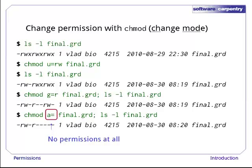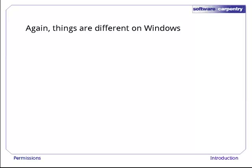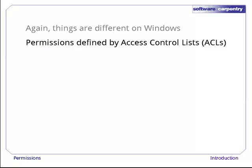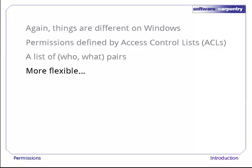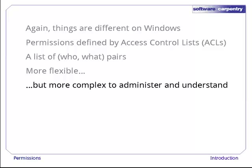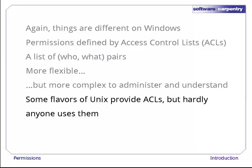Those are the basics of permissions on Unix. As we said at the outset, things work differently on Windows. There, permissions are defined by access control lists, or ACLs. An ACL is a list of pairs, each of which combines a who with a what. For example, you could give the mummy permission to append data to a file without giving him permission to read or delete it, and give Frankenstein permission to delete a file without being able to see what it contains. This is more flexible than the Unix model, but also more complex to administer and understand, at least on small systems. Some modern variants of Unix actually support ACLs as well as the older read-write-execute permissions, but hardly anyone uses them.